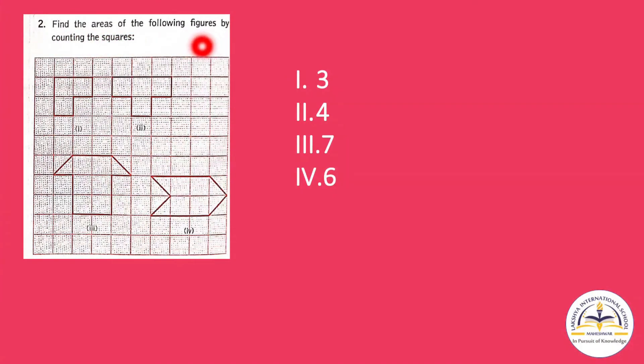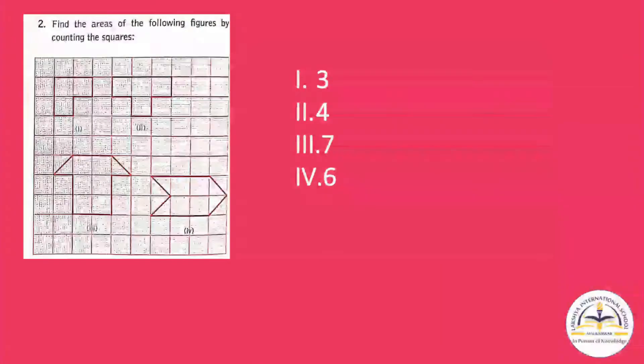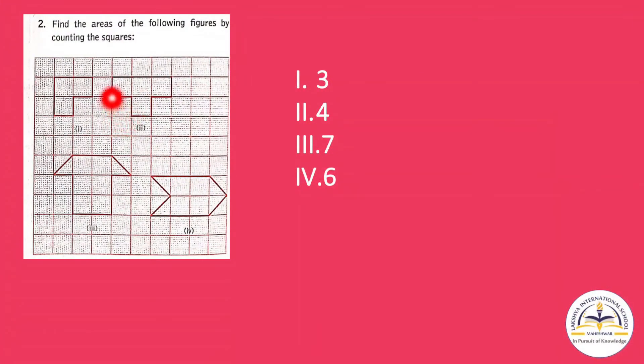Now question number two: find the areas of the following figures by counting the squares. Now here you have to find out the area by just counting the number of squares. Now for the first figure, how many squares it consists? One, two, and three. One, two, and three. So the answer will be three.